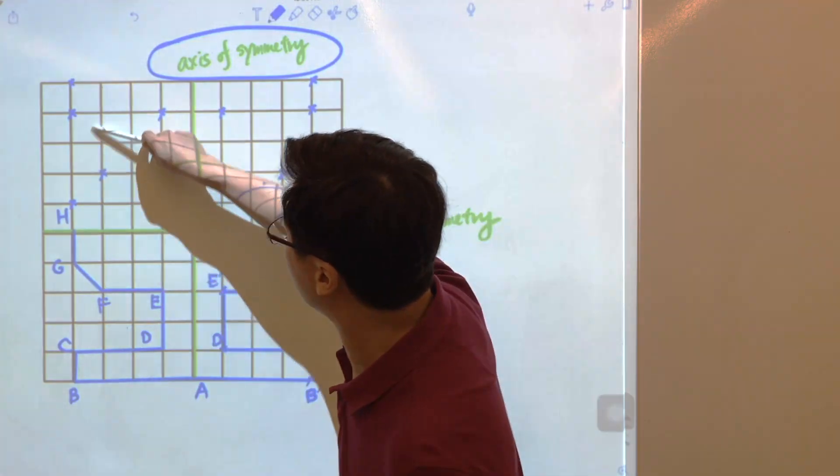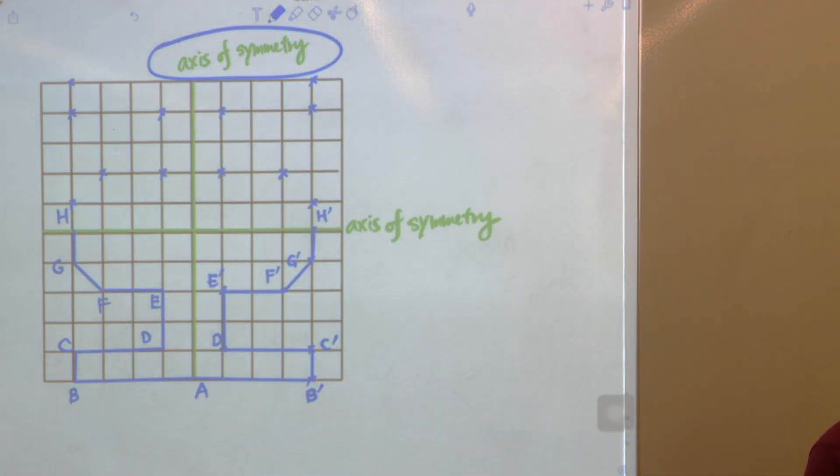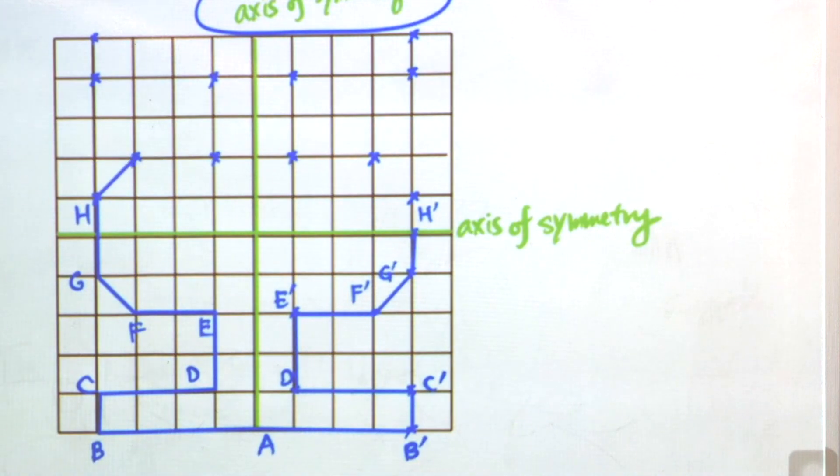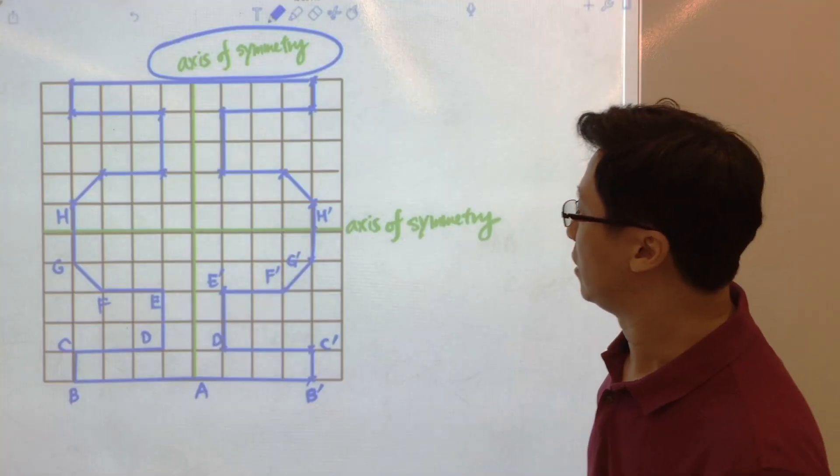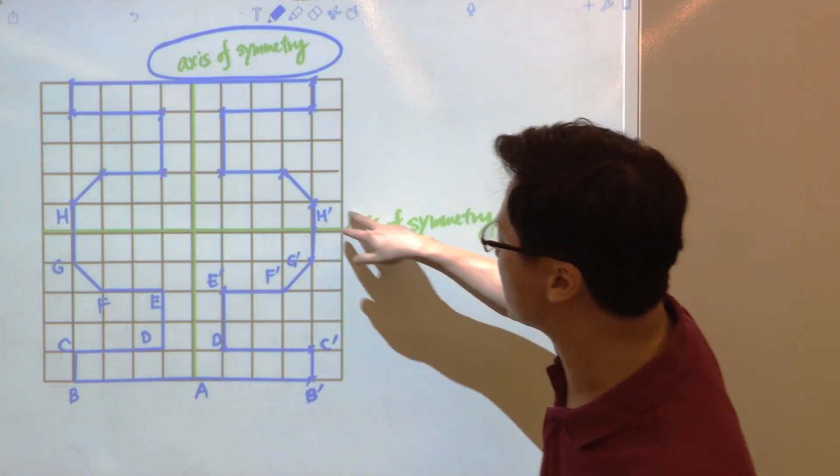And we can simply draw it one by one. And finally, connect the dots together. And now the pattern is like this, just like the Chinese character R.